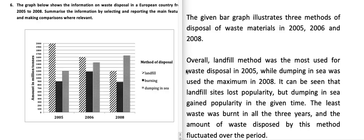Hello students. Today I am going to discuss this column graph. There are three methods of waste disposal given. The three methods are landfill, burning, and dumping in sea. The amount of waste disposed by these methods is given on the y-axis in million tons. The three years given on the x-axis are 2005, 2006, and 2008. The given bar graph illustrates three methods of disposal of waste materials in 2005, 2006, and 2008. This is the introduction, made from the question topic that is given here.